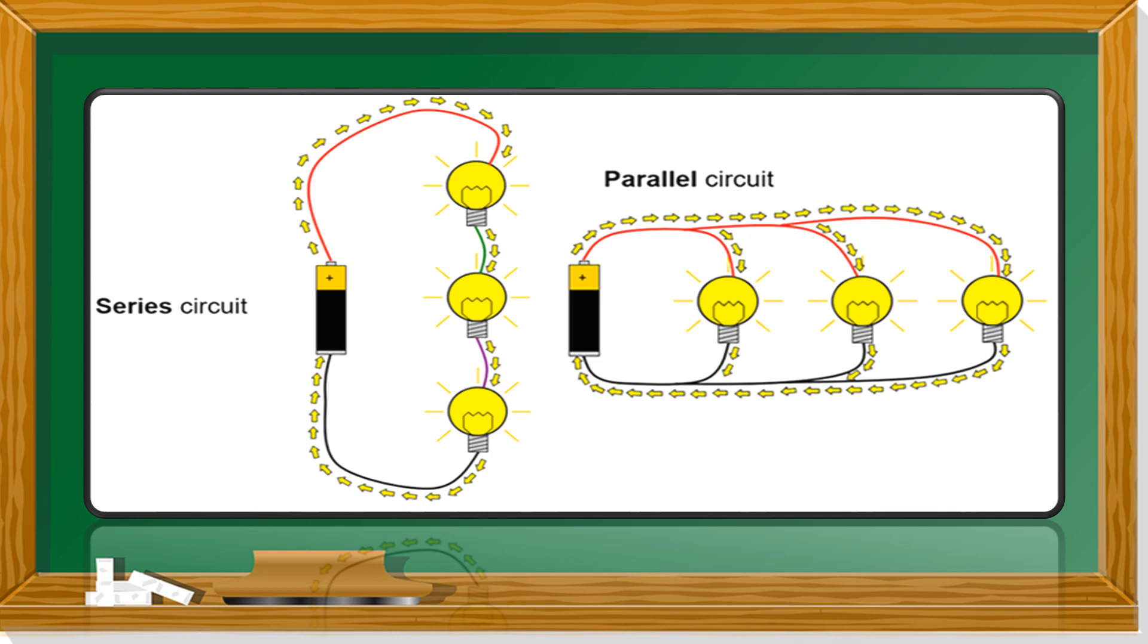A series circuit, electric current flows through a single path. So when one bulb is loosened or busted, all the other bulbs in this circuit will not light anymore.